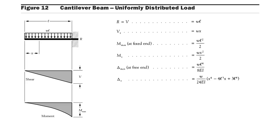For a cantilever beam carrying a UDL, the maximum bending moment value is wl² / 2 at the fixed end, the maximum deflection value is wl⁴ / 8EI at the free end, and the shear force or reaction is equal to wl.